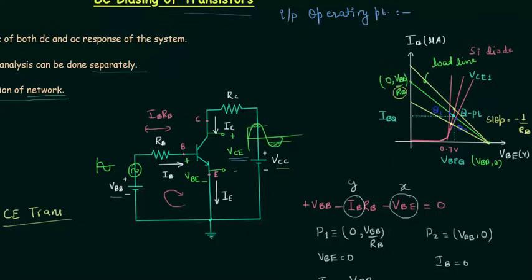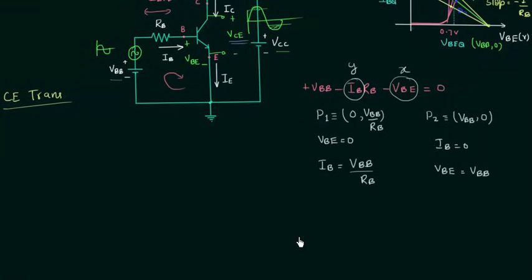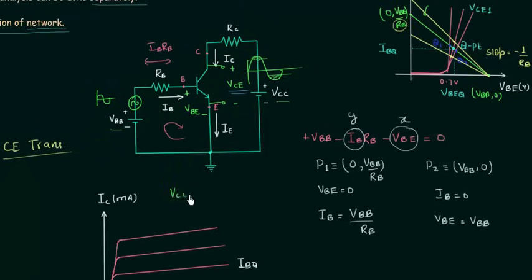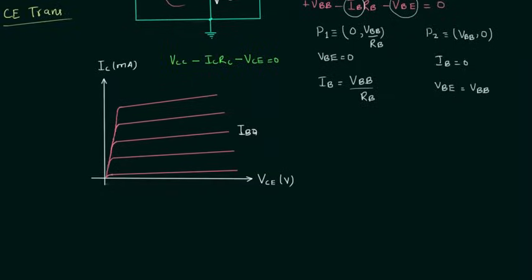Now we move to the output operating point. The intersection of the load line with the transistor output characteristics for a particular value of base current IB gives the output operating point. Applying KVL in the output loop: VCC − IC·RC − VCE = 0. When VCE = 0, the collector current IC = VCC / RC. When IC = 0, VCE = VCC. These two conditions give us the two endpoints needed to draw the load line on the output characteristics.